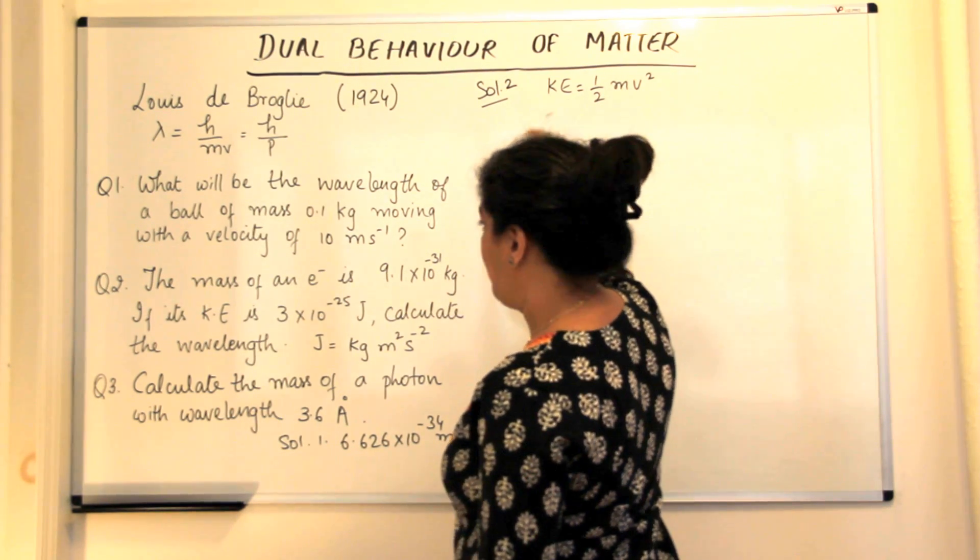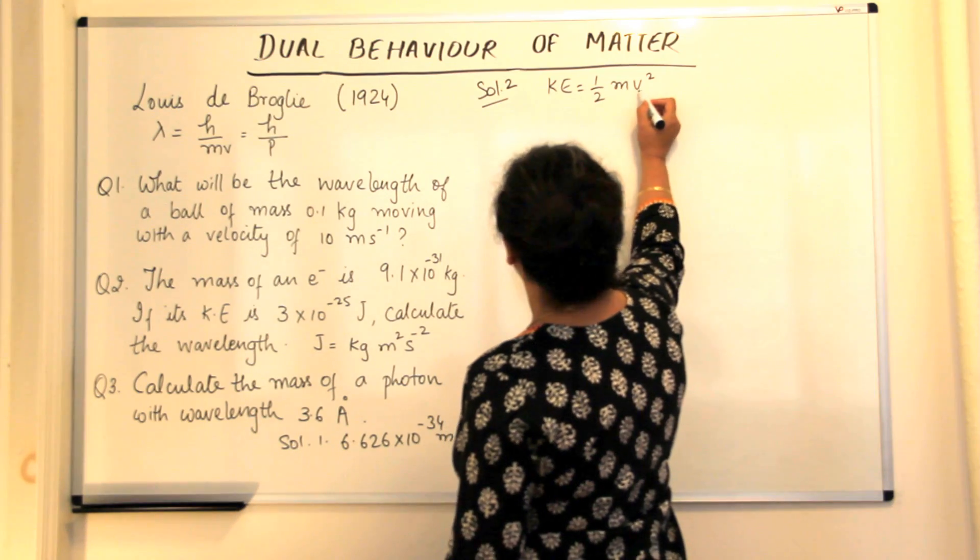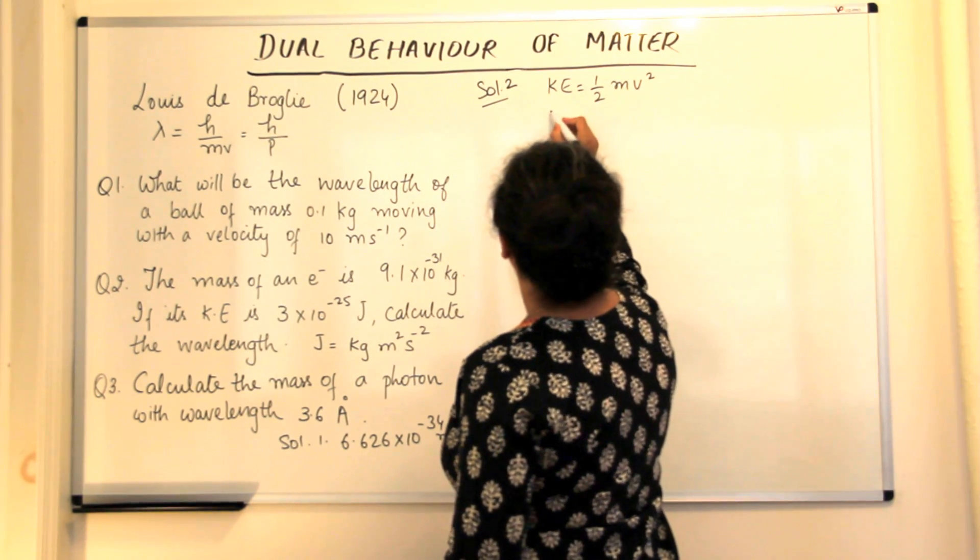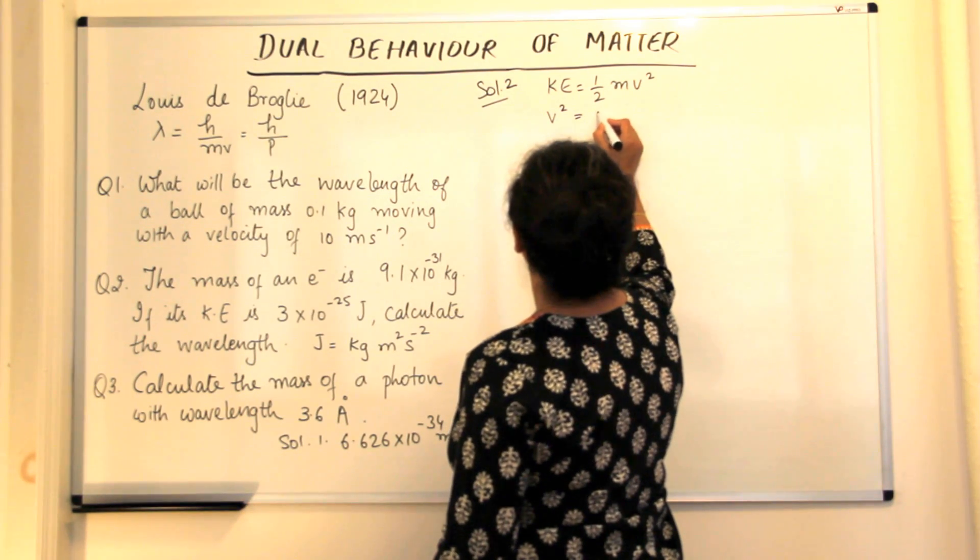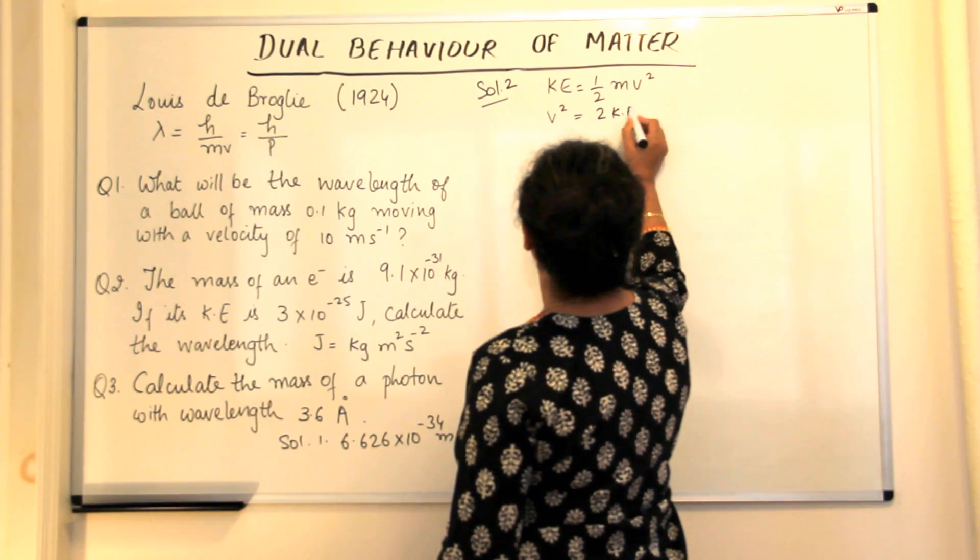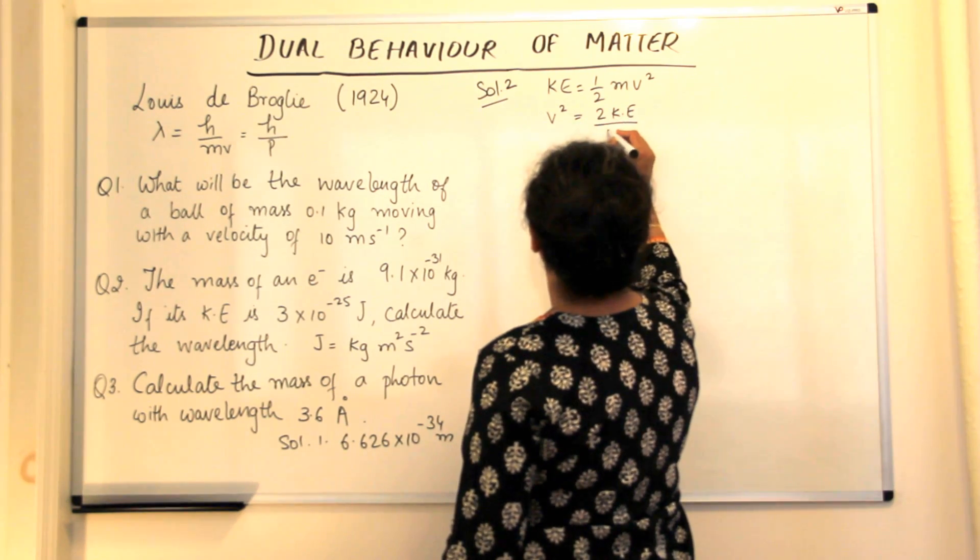Mass of an electron is given, sorry, and we will first calculate the velocity.